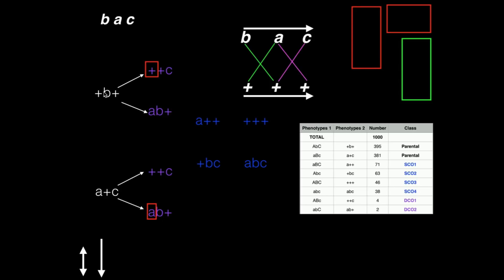In one case, when comparing the parental and the first double crossover, A stays the same while the other two change. In the other case, A changes while the other two stay the same. I can verify this with the second parental as well — A changes but B and C stay the same, whereas A would be expected to stay the same while B and C change. Therefore A is the gene in the middle, which means B and C flank it on either side. I'll write the order as B, A, C.